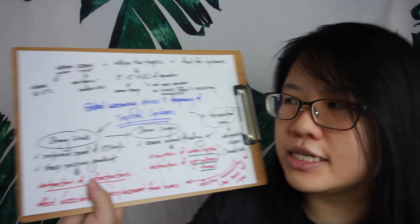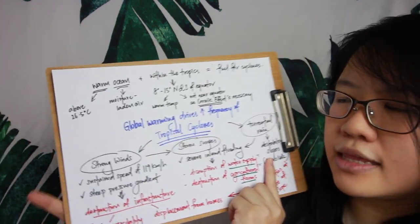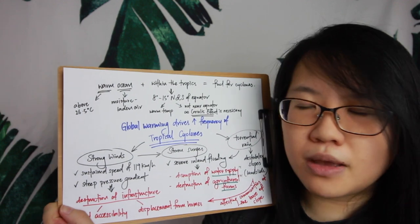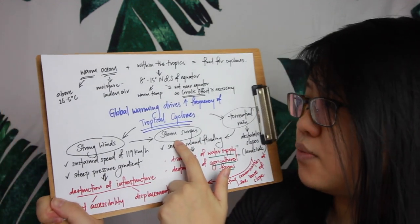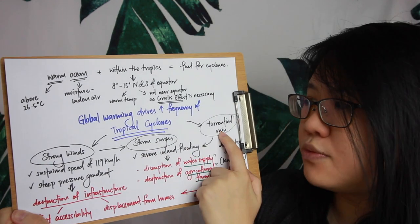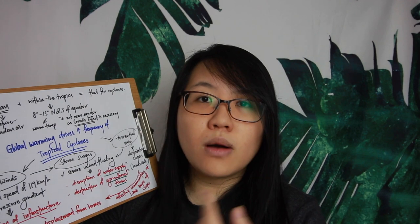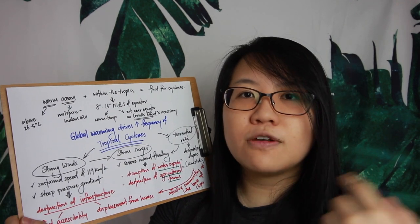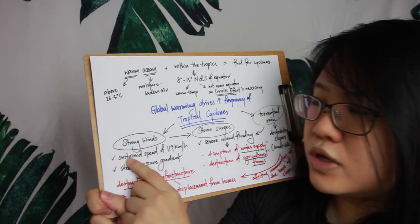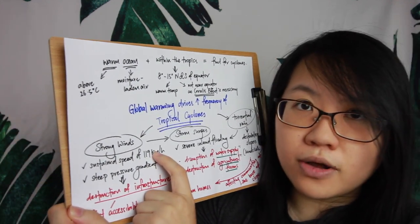Tropical cyclones bring about three things: strong winds, storm surges, and torrential rain. Strong winds develop because as the warm ocean body fuels the cyclone, it moves faster and faster, reaching a sustained speed of at least 119 kilometers per hour. The reason for such high speed is the steep pressure gradient, as discussed in Gateway 1.